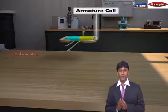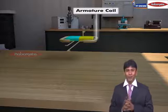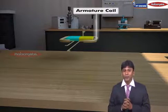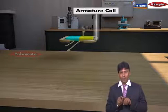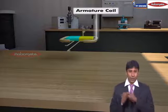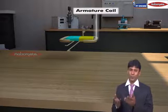The first part is an armature coil. Children, we had seen this armature coil in a motor also. So what is armature coil? It is a rectangular metal slab on which there is a coiling of copper wire. So copper wire is coiled on a rectangular metal slab and this is called as an armature coil.